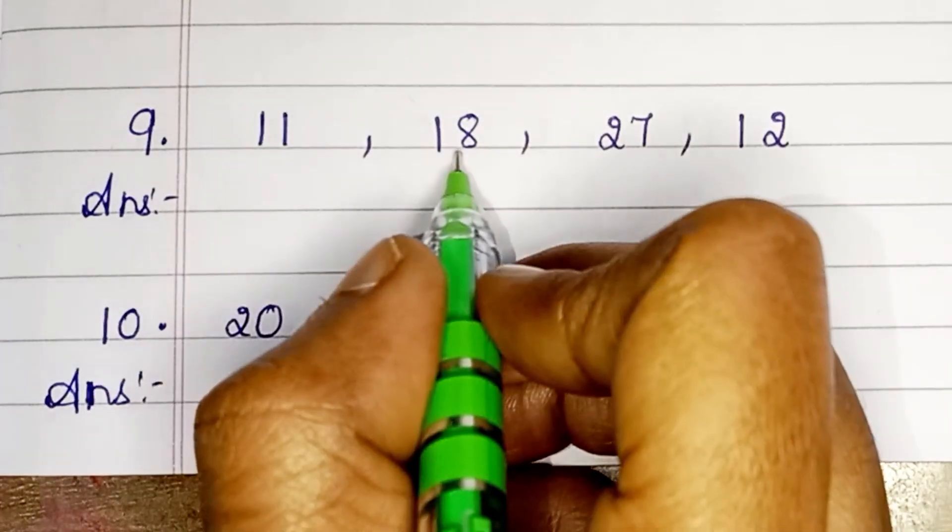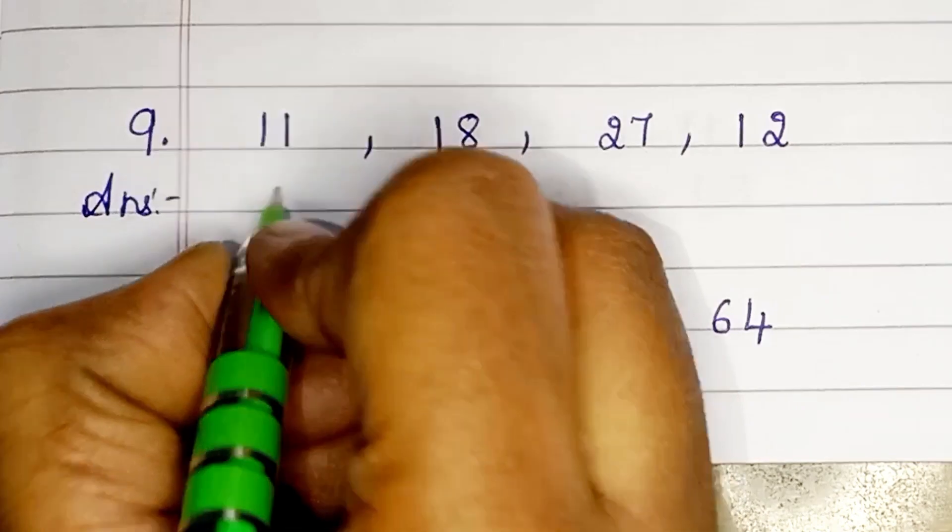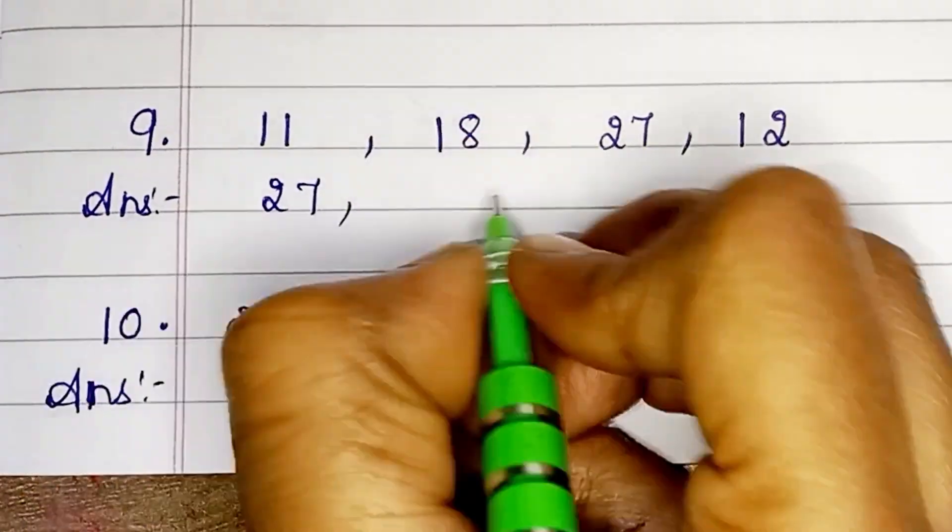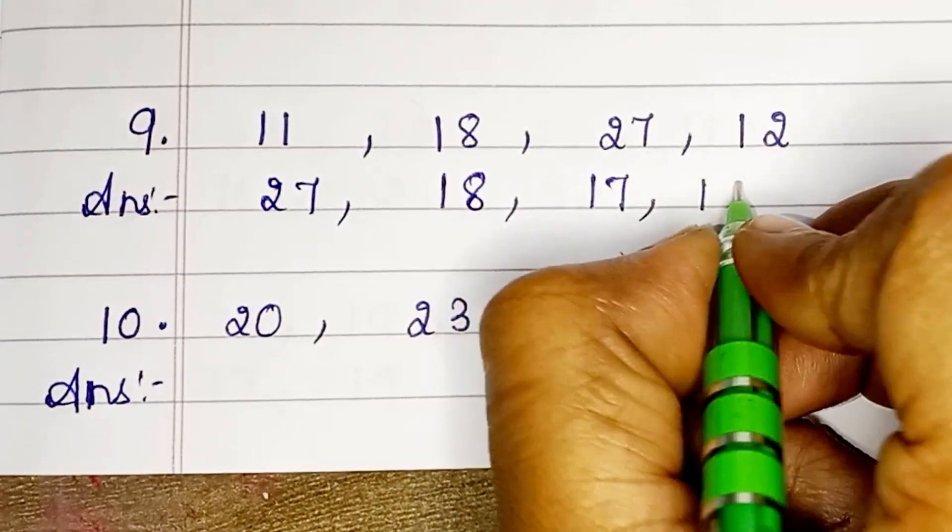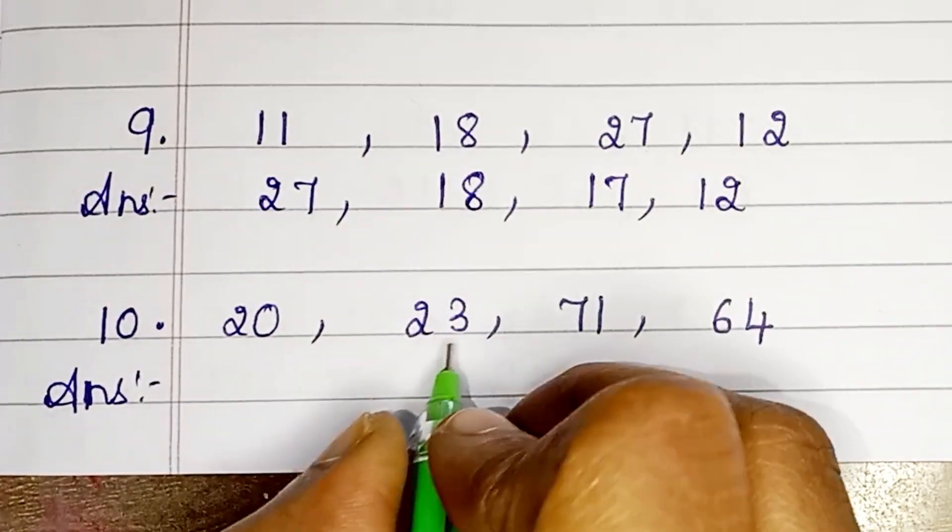Next set of numbers: 11, 18, 27, 12. In descending order: 27, 18, 17, 12.